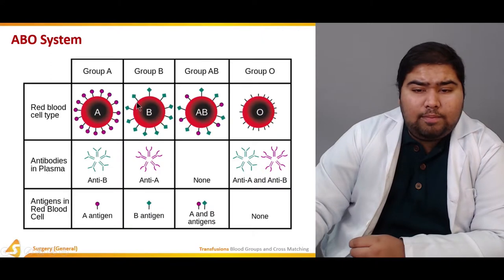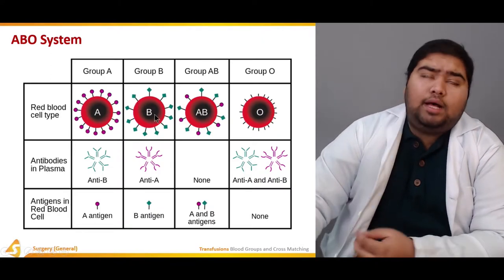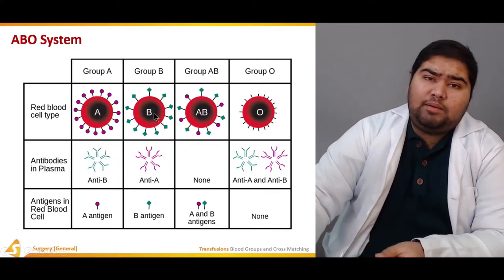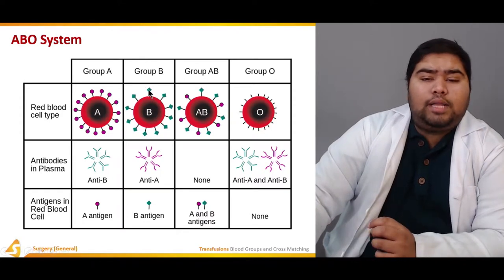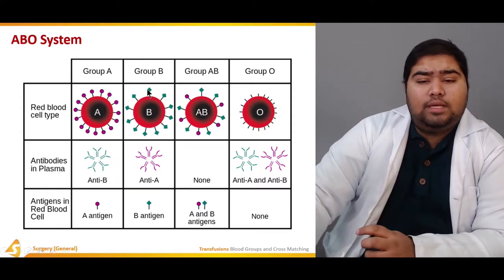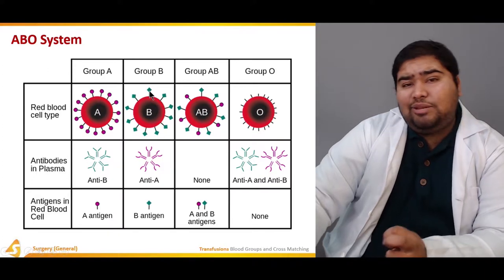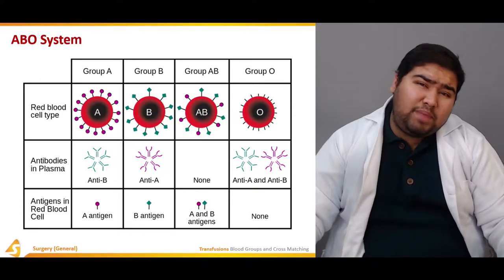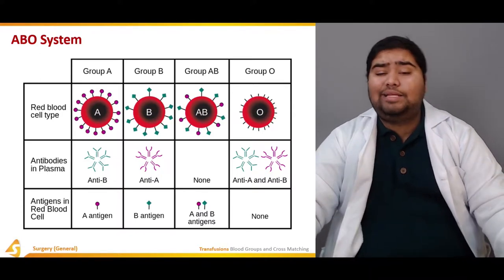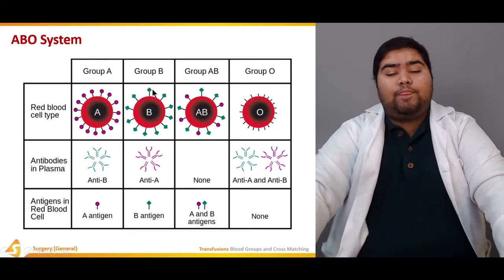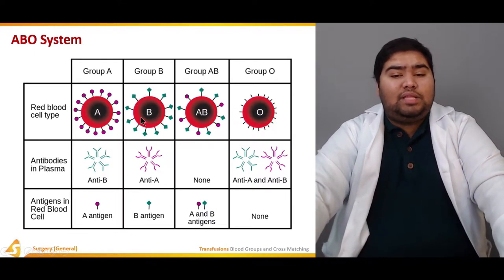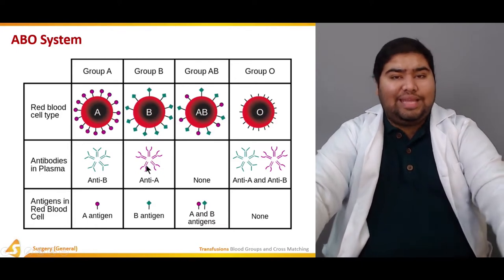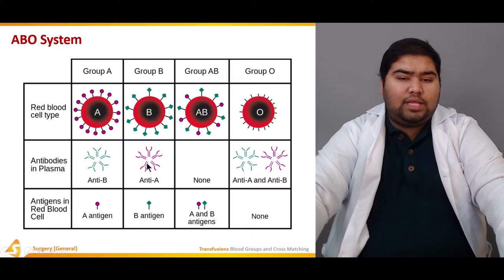This is blood group B. The phenotypic component is blood group B; the genotypic component can be either BB or BO. The surface shows antigen B — the B-type carbohydrate residues being expressed on the surface glycoproteins. Blood group B has anti-A antibodies within their plasma.